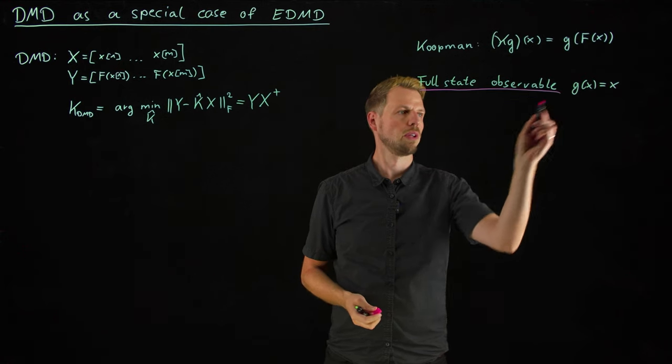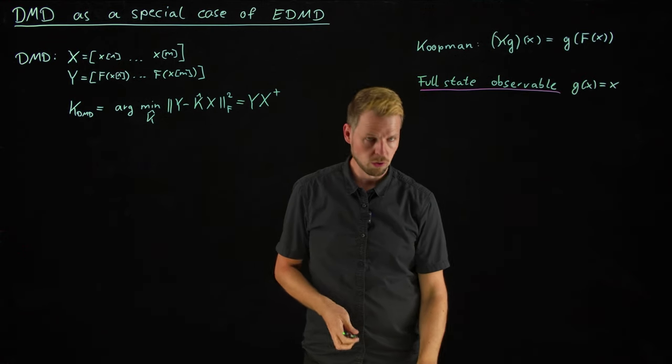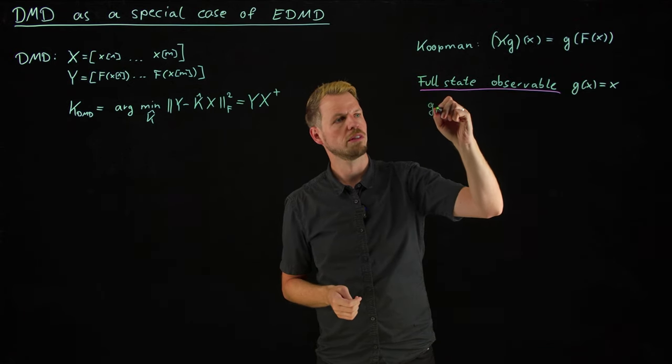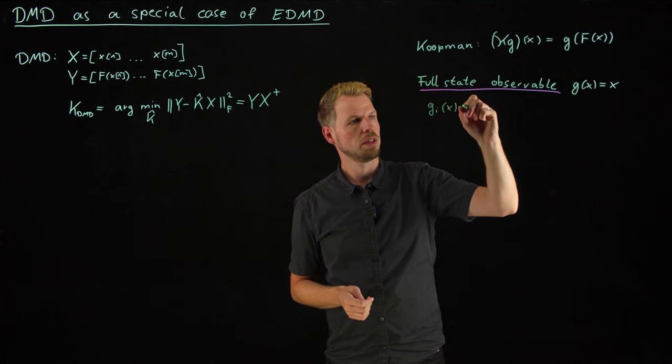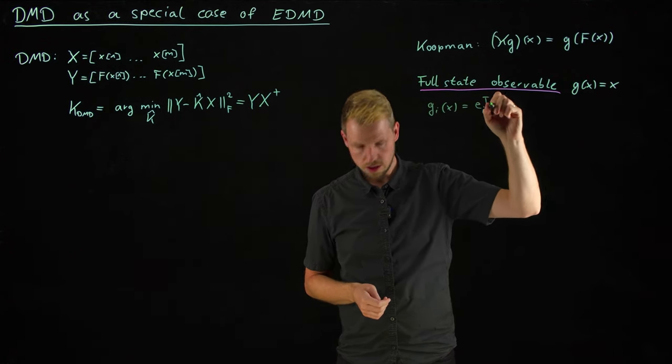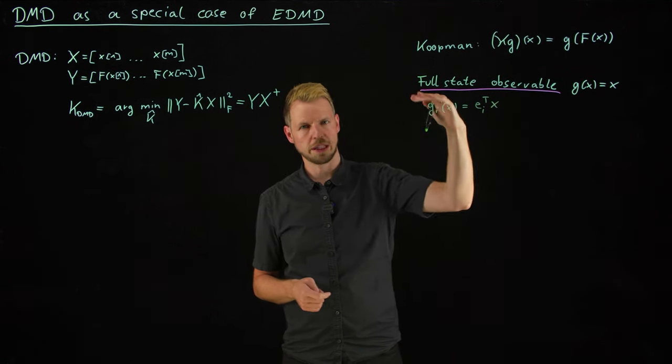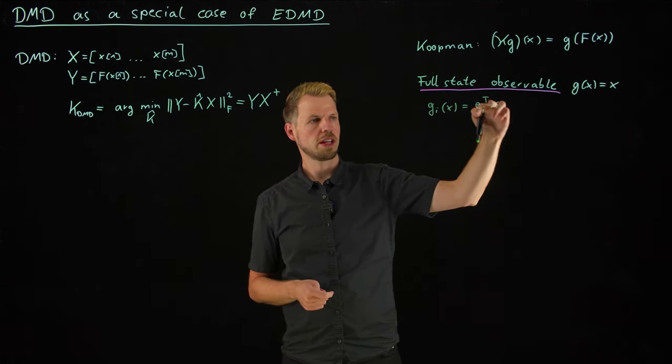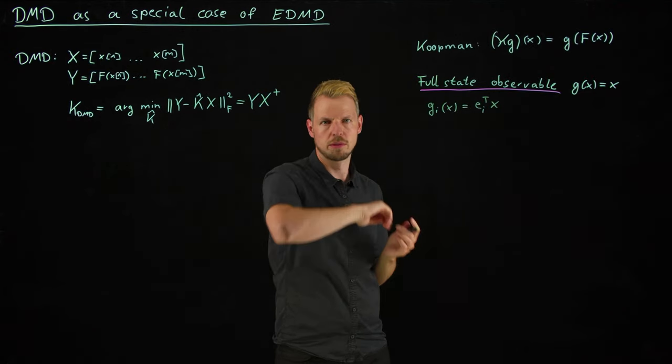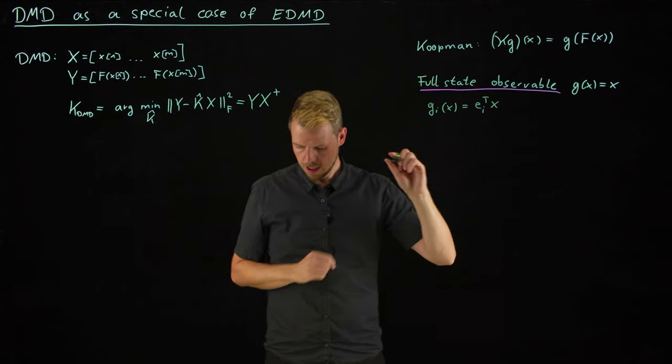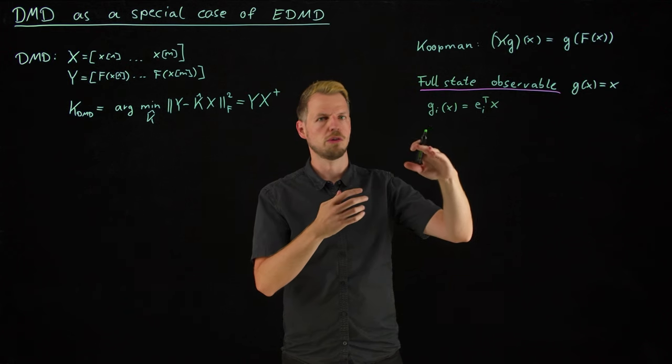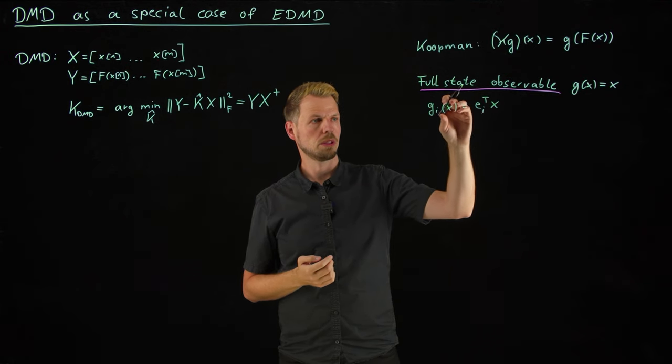Only that we are now considering this full state observable, very popular for many applications where we have access to measurements of the full state. And what you can now do is, if we go at this vector wise, this is simply the i-th Euclidean vector times the state x. So we are really picking component by component of the state by this observable function. And then the Koopman operator still propagates forward in time this function.